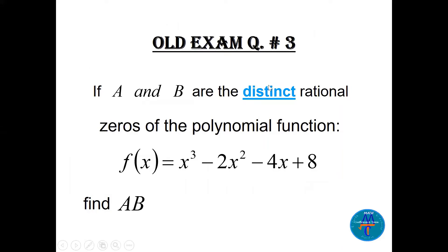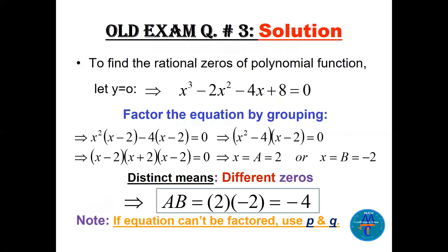Question 3: if A and B are distinct (different) rational zeros of a cubic polynomial x³, find A times B. We set y=0 and factor by grouping. Take x² as a common factor to get (x²)(x-2); take -4 common to get -4(x-2); then factor out (x-2) to get a difference of two squares: (x-2)(x+2)(x-2). The distinct zeros are x=2 and x=-2, so A×B = -4. If the equation cannot be factored, use P/Q.